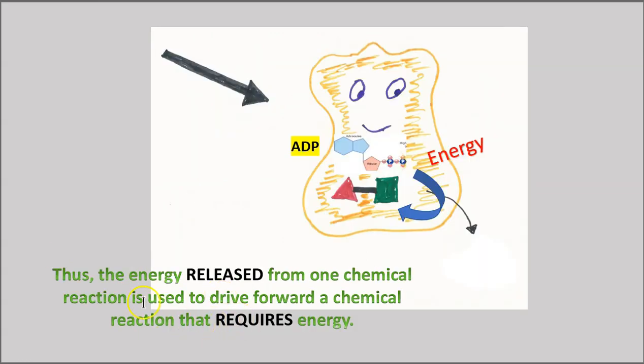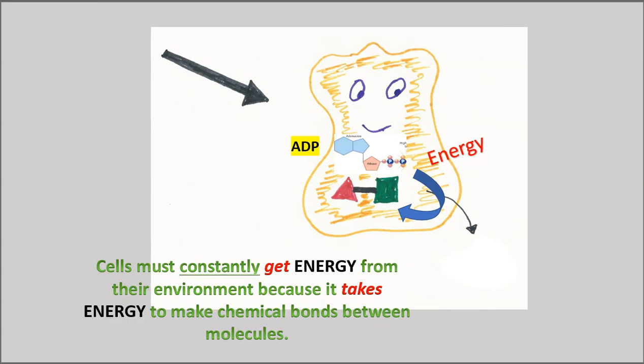So to summarize, the energy released from one chemical reaction is used to drive forward a chemical reaction that requires energy. We're going to release the energy from ATP and use it to make this chemical bond right there. That required energy because it takes energy to force molecules together to get close enough so that a chemical bond can form. Cells must constantly get energy from their environment because it takes energy to make chemical bonds between molecules.